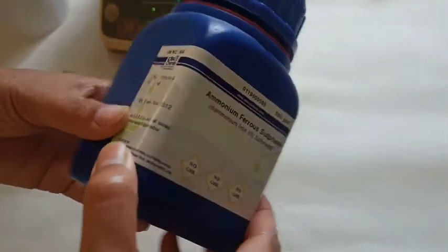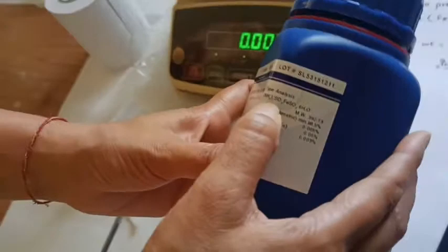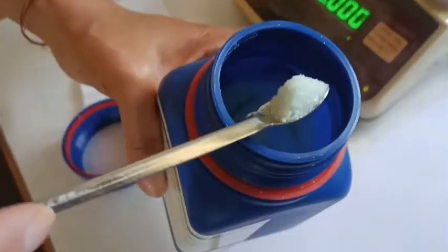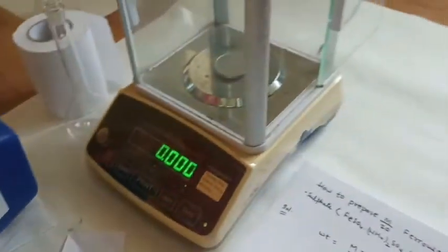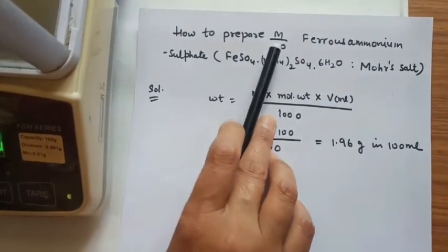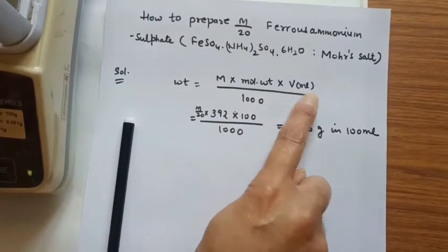Now we are preparing the solution of ferrous ammonium sulphate or Mohr's salt. Its molecular weight is 392. This is its formula: (NH4)2SO4, FeSO4 plus 6H2O. Let me show you how it looks. So it is light green. You can see this is not white, it is little greenish.